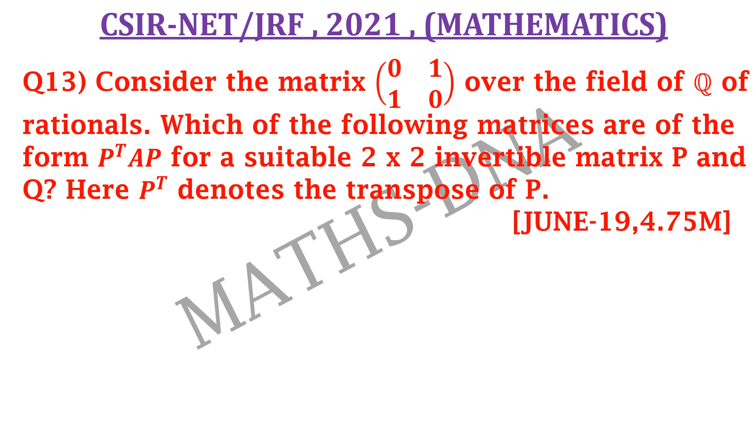This question was asked in the examination of CSIR-Net June 2019 part C that is 4.75 marks. The options are a) 2 0 0 minus 2, b) 2 0 0 2, c) 1 0 0 minus 1, and d) 3 4 4 5. I would recommend you to pause the video over here and first try this question by yourself.